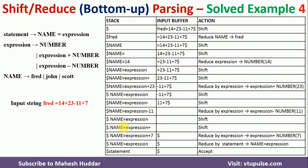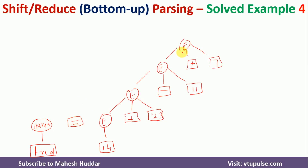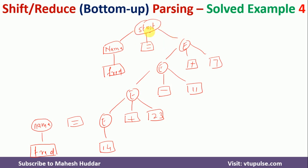Finally, name equals expression are reduced to statement. We place the equals sign and the name node — which comes from fred — under the statement root node. All three — name, equals, and expression — are reduced to statement, which is the root node. We have reached the start symbol starting from the leaf nodes, completing the parse tree.